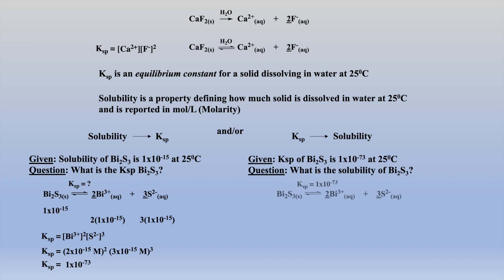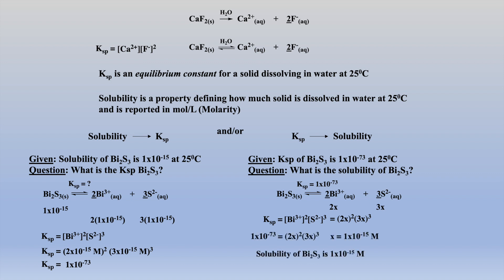Conversely, what if we were given the Ksp for bismuth sulfide and asked for the solubility of bismuth sulfide? Or maybe we were asked to calculate the concentrations of bismuth and sulfide at equilibrium. Well, first we would write our change, place those values into the solubility expression, and solve for x. Here, x equals the solubility of bismuth sulfide. If we multiply this value by 2, the final equilibrium concentration of the bismuth ion is obtained, and 3 times this value is the equilibrium concentration of the sulfide ion.